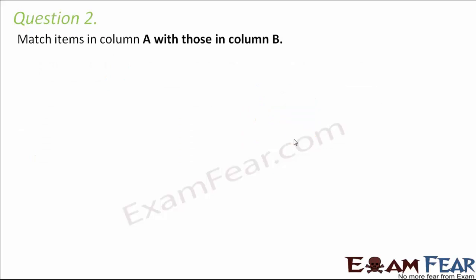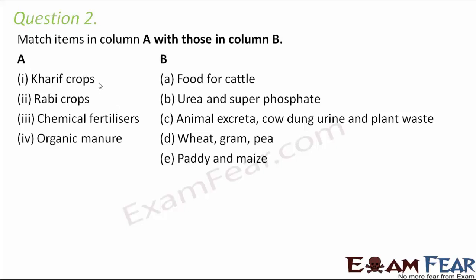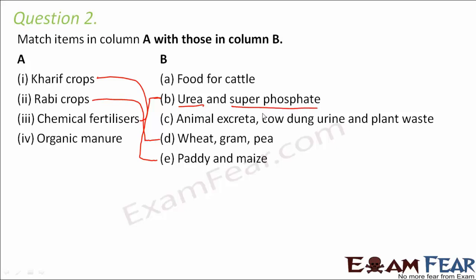Question number two: match items in column A with those in column B. Kharif crops are grown in the rainy season — examples include paddy and maize. Rabi crops are grown in the winter season — examples include wheat, gram, and pea. Chemical fertilizers such as urea and phosphate are rich in nitrogen and phosphorus but are prepared in industries. Organic manure is obtained from animal excreta, urine, and plant wastes and is prepared in the field.